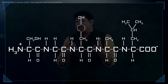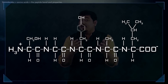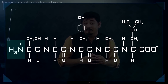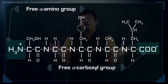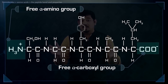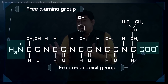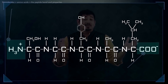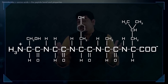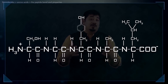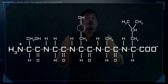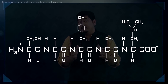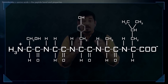Peptides typically contain only one free alpha-amino group and one free alpha-carboxyl group, at the opposite ends of the chain — at the N and C-terminal respectively. These groups ionize as they do in free amino acids, although the ionization constants are different because the oppositely charged groups are no longer linked to the same alpha-carbon as in a single amino acid.